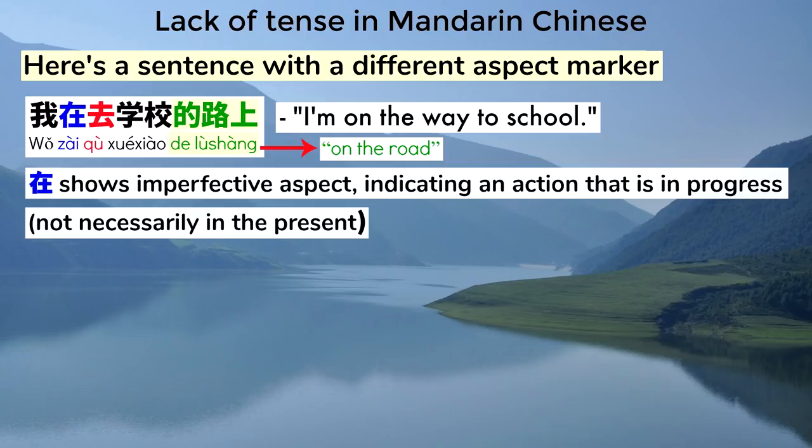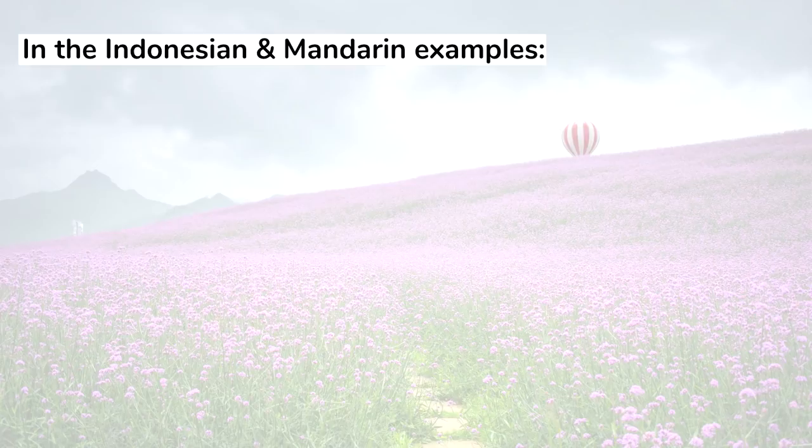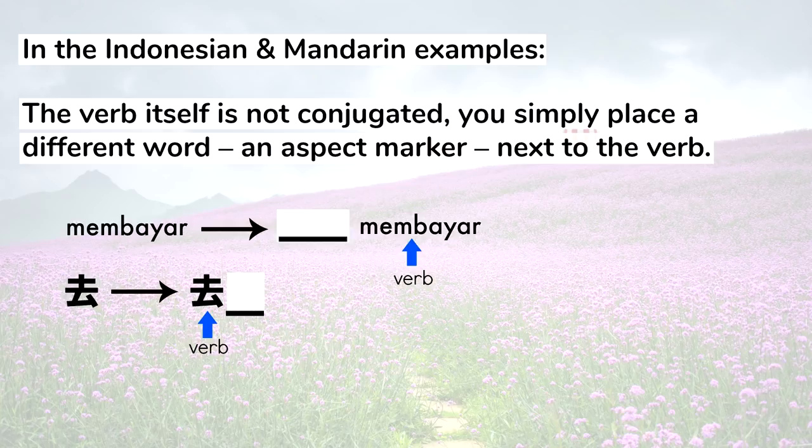The main thing to notice with the Indonesian and Mandarin examples is that the verb itself is not conjugated. You simply place a different word, an aspect marker, next to the verb. It's actually very common for languages to not have tense, but I've never heard of a language that doesn't have aspect. In many languages tense and aspect combine together to form various verb conjugations, and many people really don't distinguish between the two concepts.